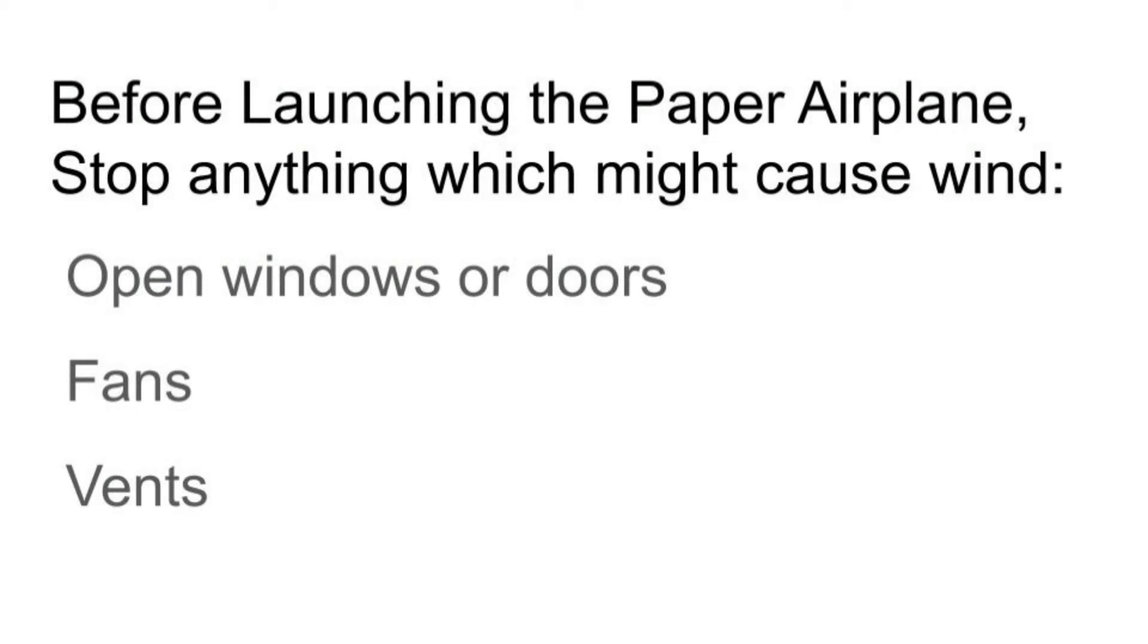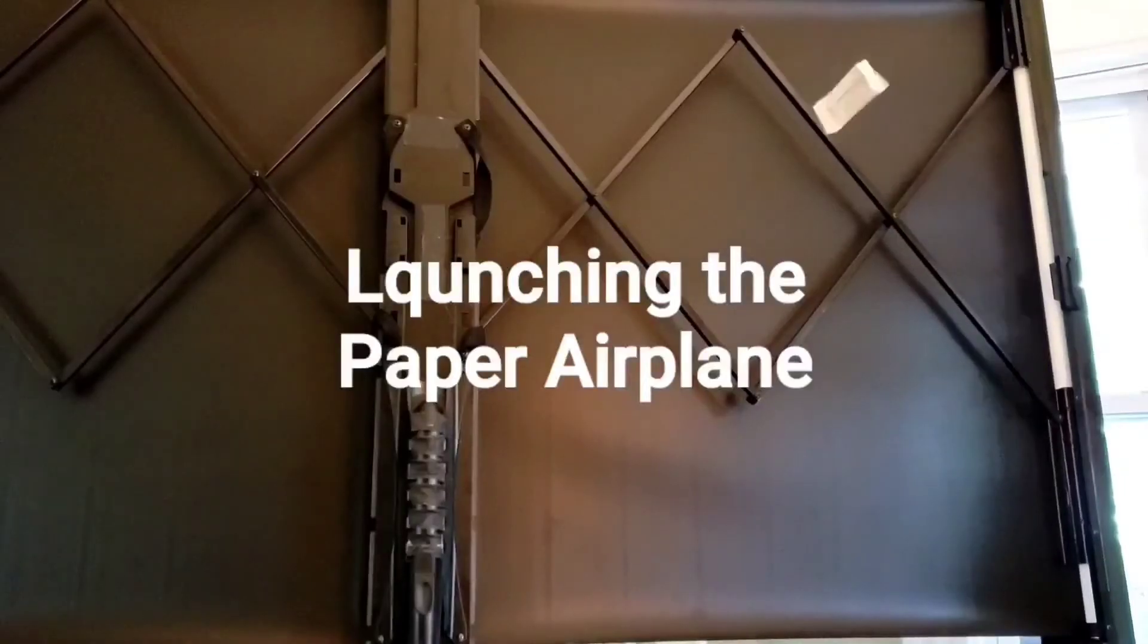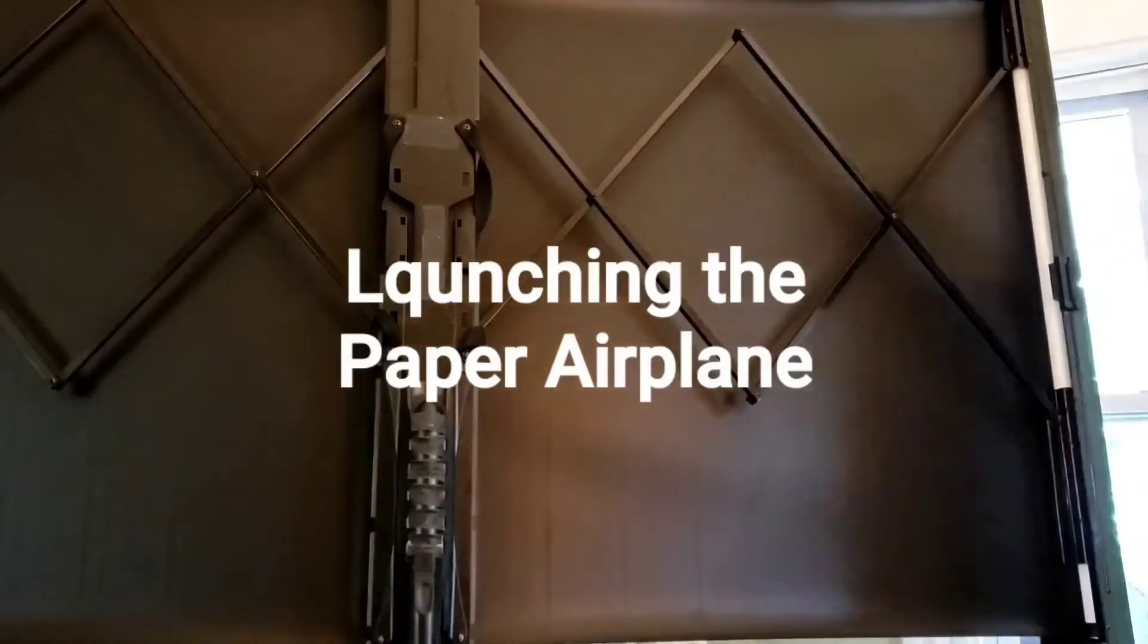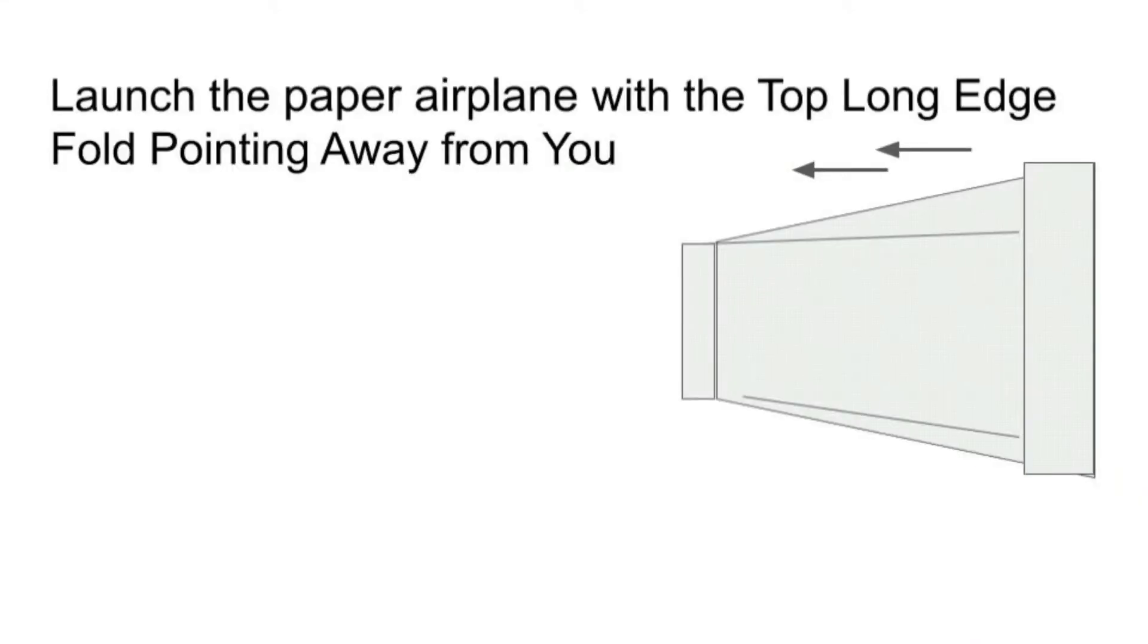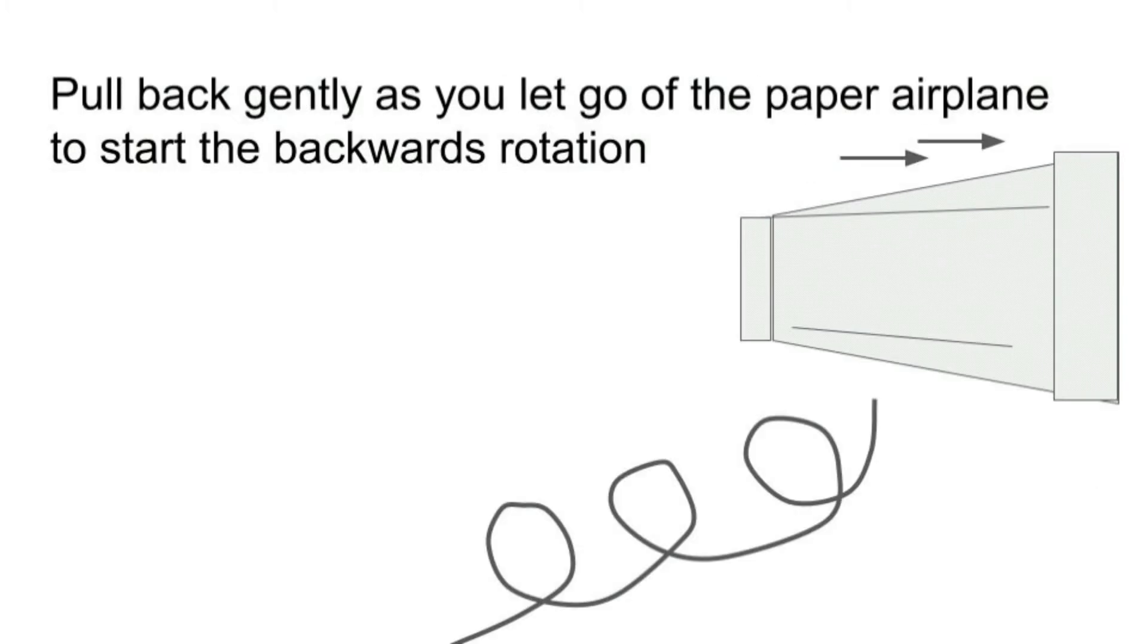Before launching the paper airplane, stop anything which might cause wind, such as open windows or doors, fans, or vents. To launch the paper airplane, hold it straight up and down with the top long edge fold pointing away from you. Pull back gently as you let go of the paper airplane to start the backwards rotation.